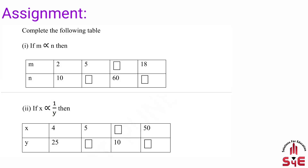Assignment: First, if m is directly proportional to n, then complete the following table. Second, if x is inversely proportional to y, then complete the following table. The first question is of direct variation, and the second question is of inverse variation.